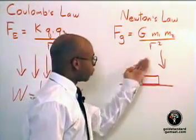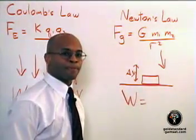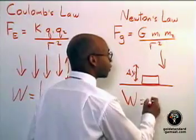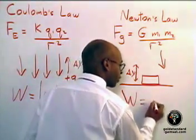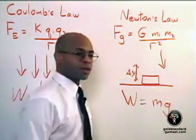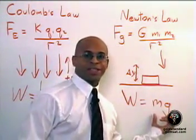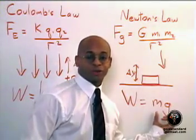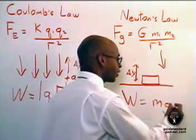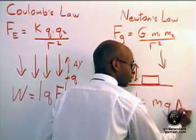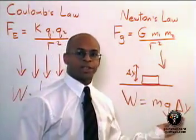So as we're moving this this way, we have work is equal to force times distance. The force, we said earlier, equivalent to QE is MG. Of course, we'll be seeing a little later, what we usually, the word we usually use for this is simply the weight of the object. So we have MG, and it's moving a distance delta Y. So there we have work is force times distance.